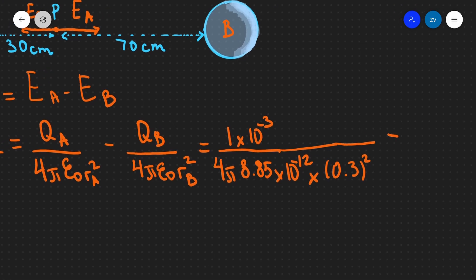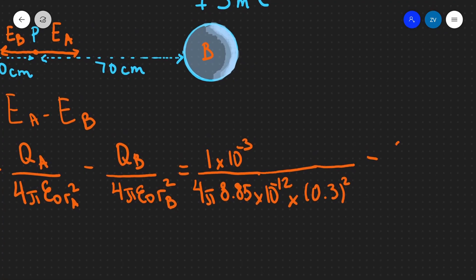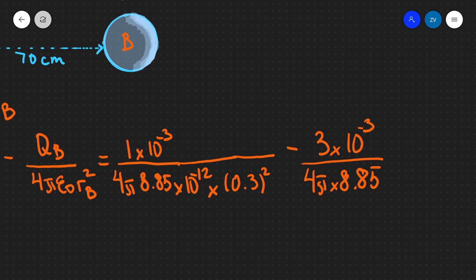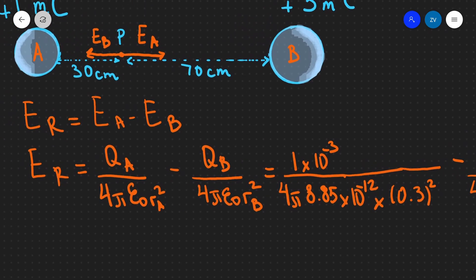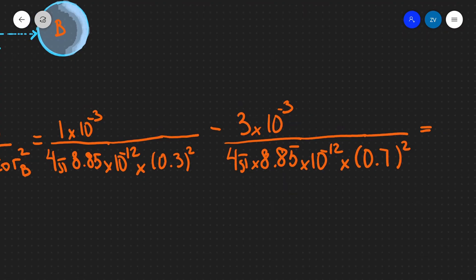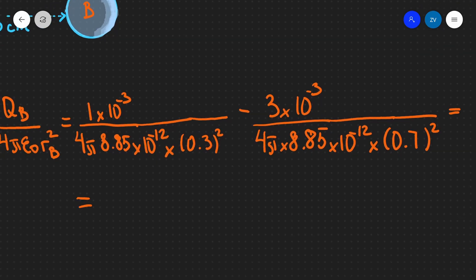From that we need to take away the charge of B, which is 3 millicoulombs, so that's 3 × 10⁻³, over 4π times 8.85 × 10⁻¹², and the distance to charge B is 70 centimeters, so it's times 0.7 meters squared. If we put that into a scientific calculator, we get approximately 4.5 × 10⁷ newtons per coulomb to two significant figures.